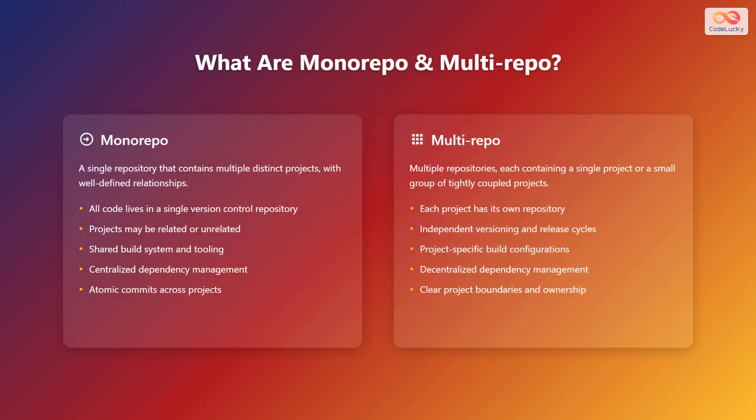Let's define each strategy. A monorepo is a single repository that contains multiple distinct projects with well-defined relationships. Key points include: all code lives in a single version control repository, projects may be related or unrelated, there's a shared build system and tooling, centralized dependency management, and atomic commits across projects.